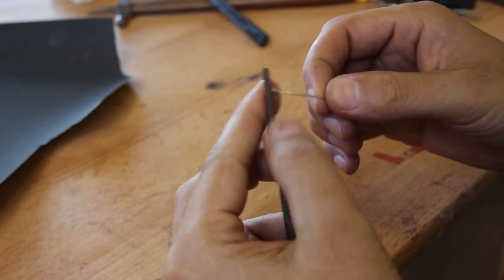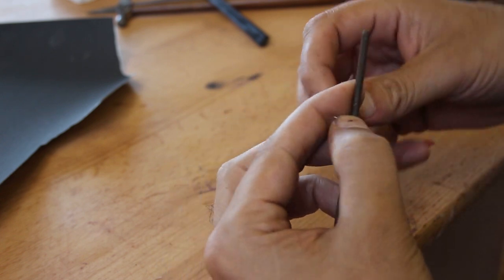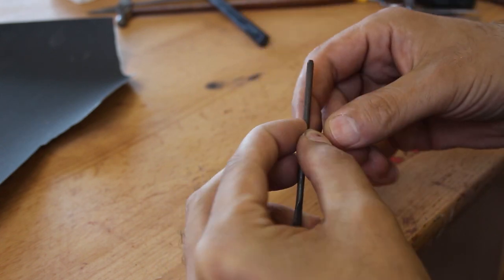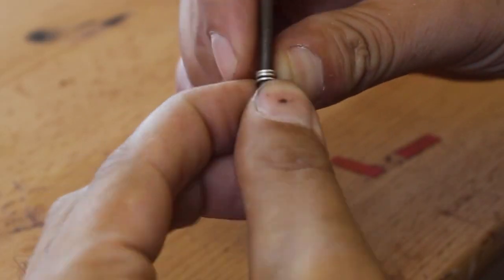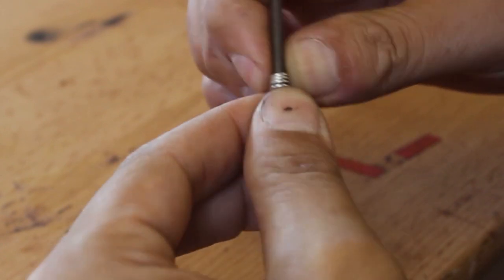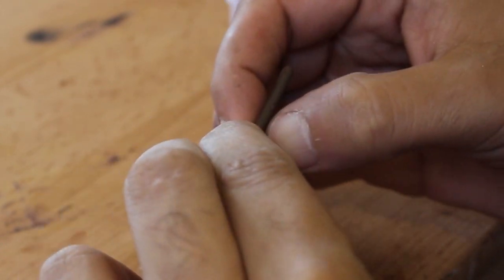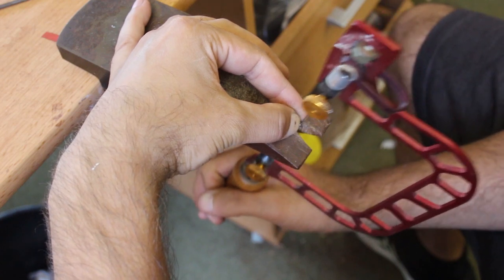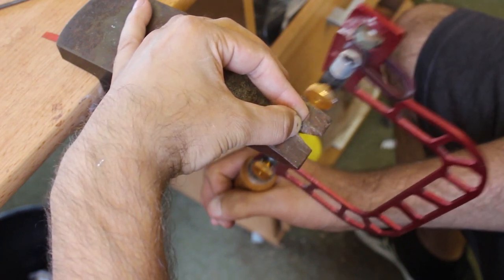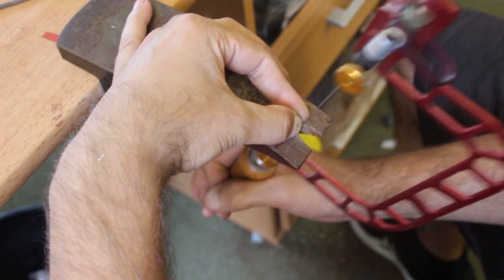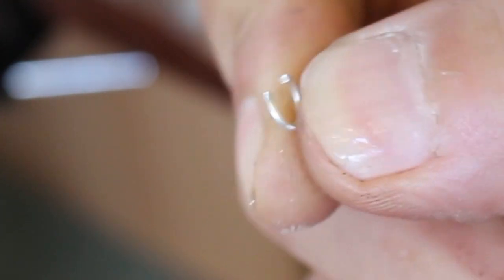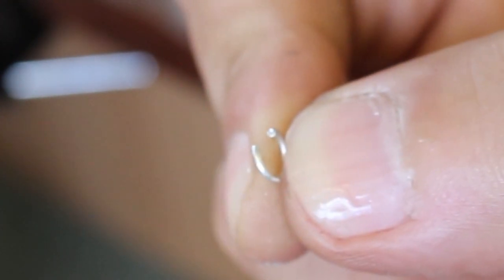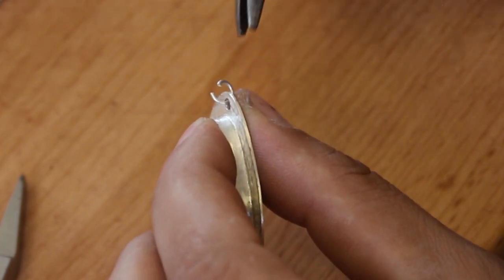For this pendant, I decided to make a simple jump ring so that it could hang off the chain. And so to do that, I just took a piece of 0.8 mil silver round wire, wrapped it around the handle of a file until I had like a coil. And then I just cut a straight line down the coil with a jeweler's saw until I ended up with a little round ring like this.